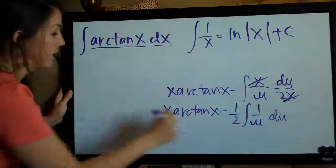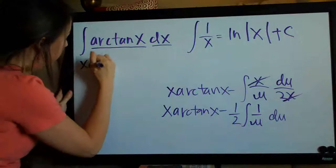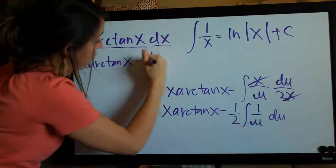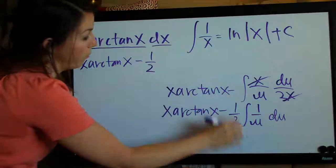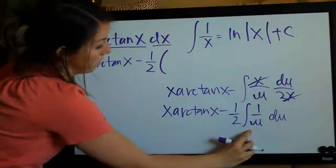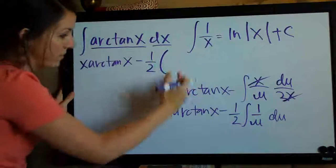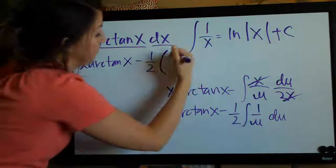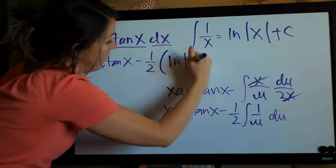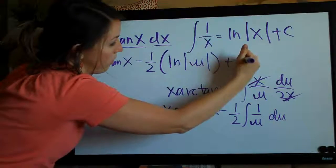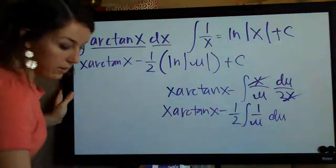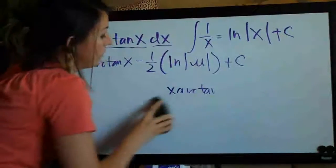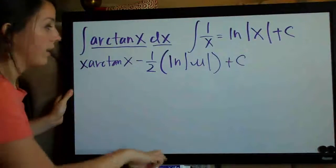So let's go ahead and take the integral. We'll have x arctan of x minus one half, and the integral of this is of course natural log of the absolute value of u, and then we have to always add c to account for the constant.